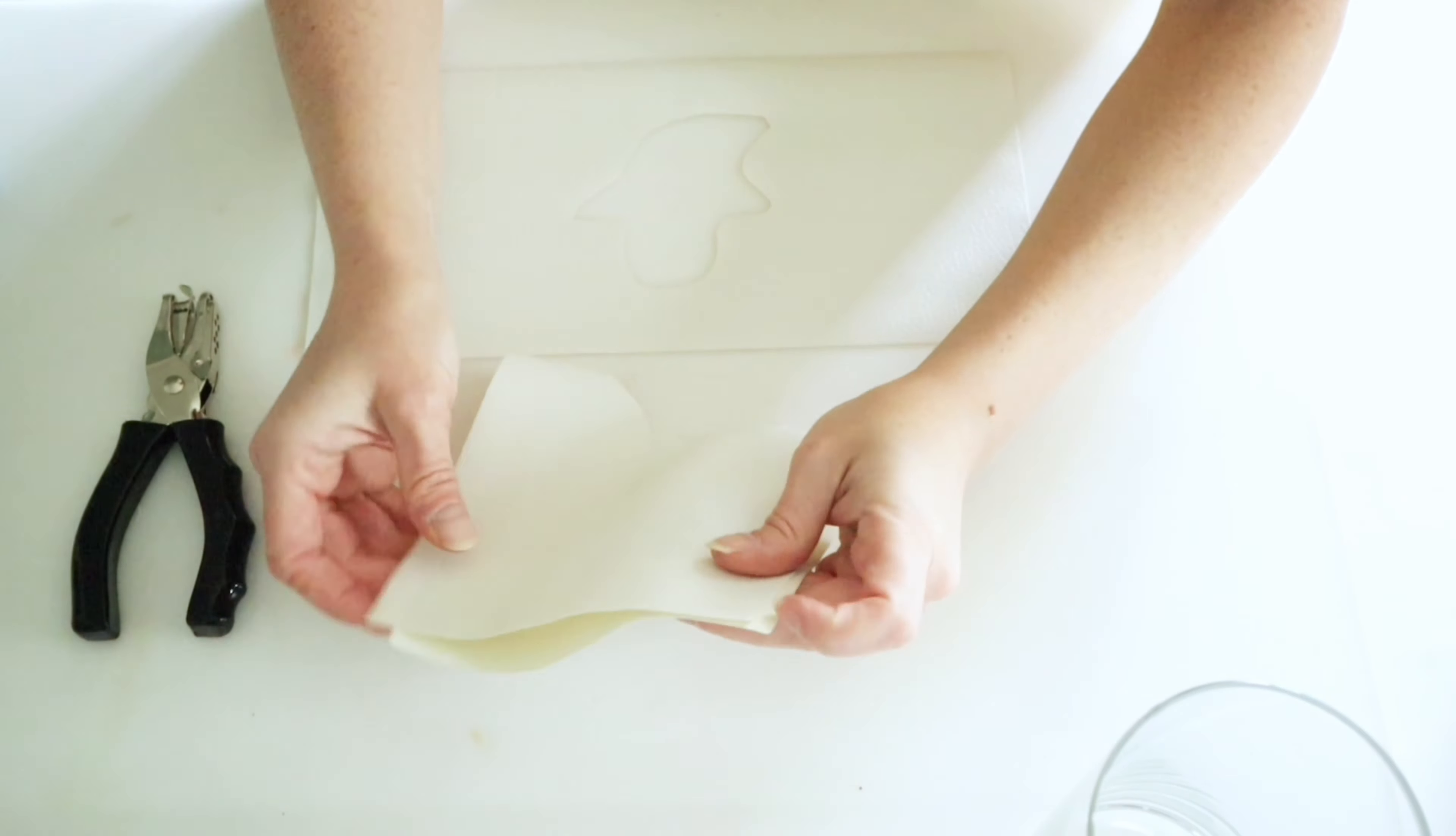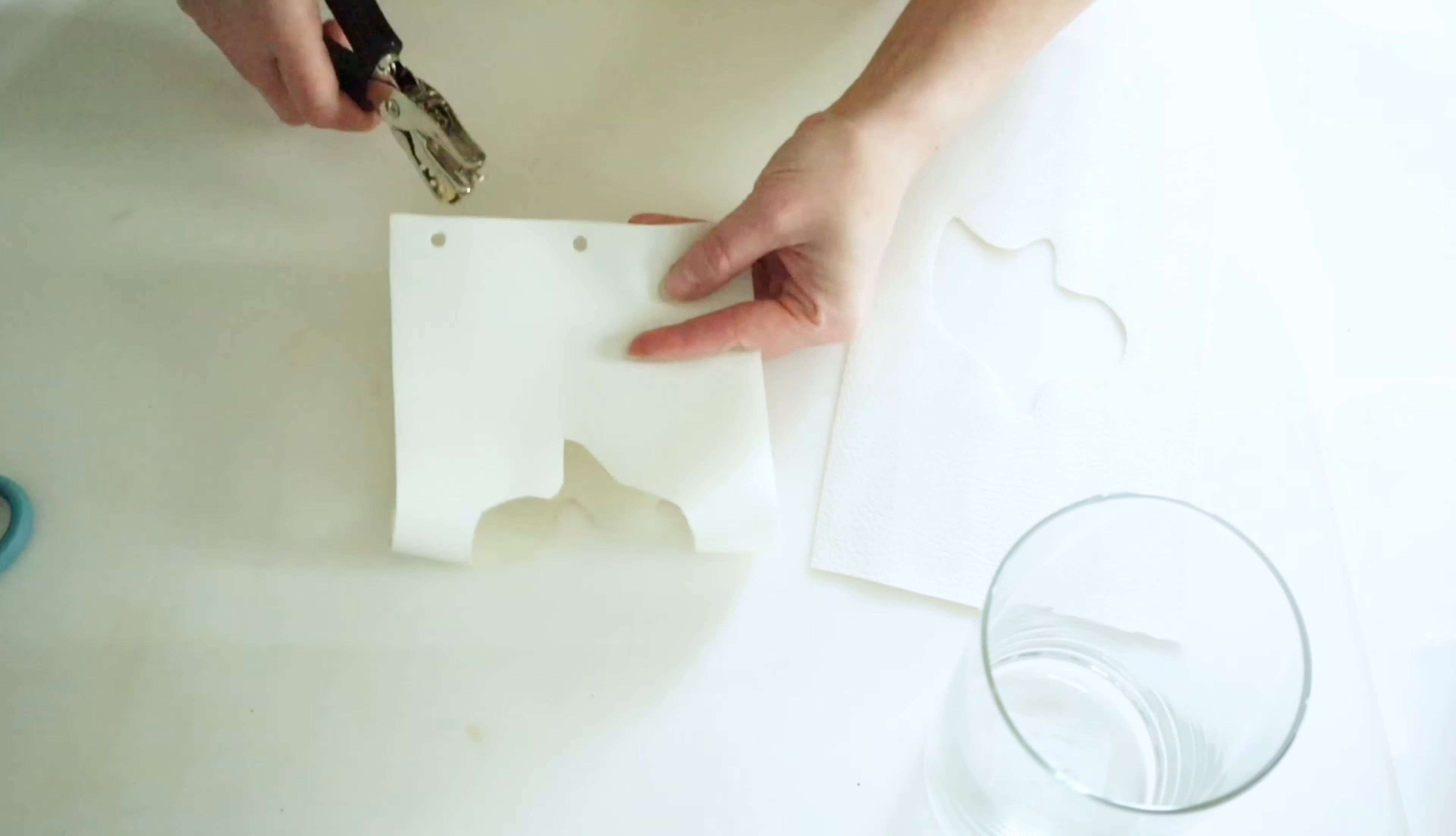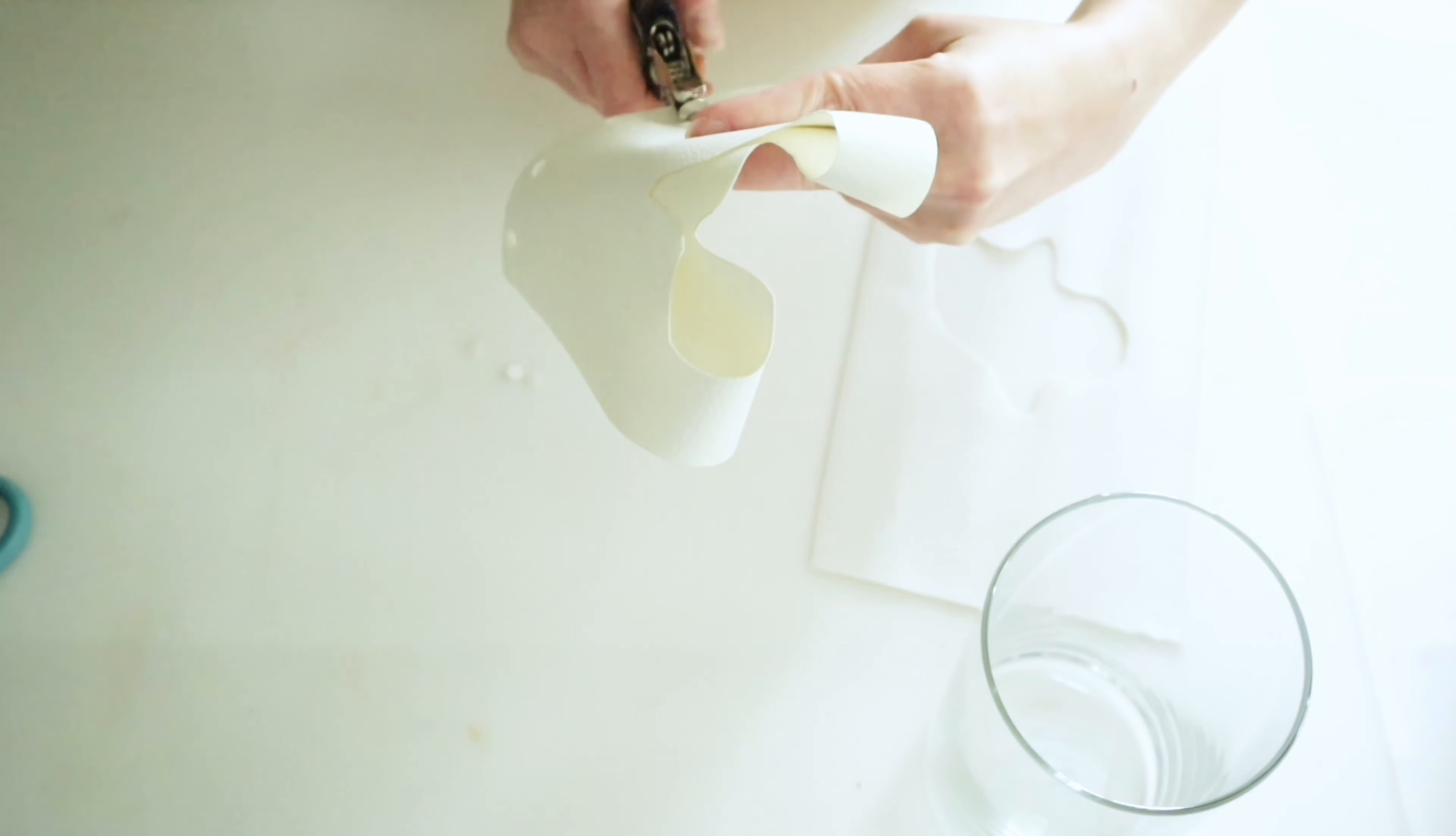And once I have the ghost cut out, I'm just going to go ahead and fold these in half and I'm just using my little hole punch here and I'm going to make five holes in the back side of this so that I can lace it up around the vase.